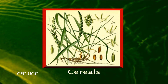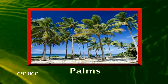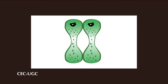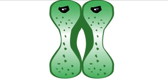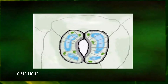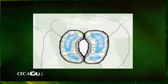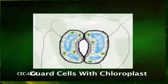In cereals, members of Cyperaceae, and some palms, the guard cells are dumbbell-shaped in outline. Their expanded ends are thin-walled, while the middle portions are highly thick-walled. Guard cells contain a few chloroplasts, whereas their neighboring epidermal cells seldom do.